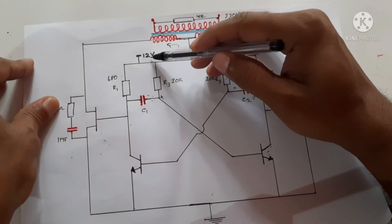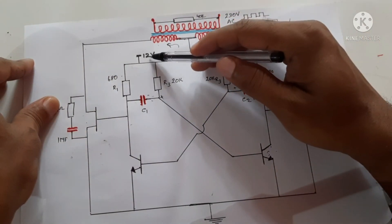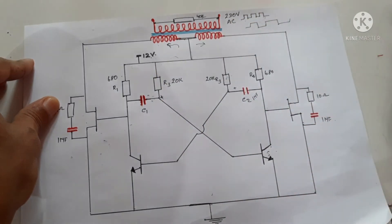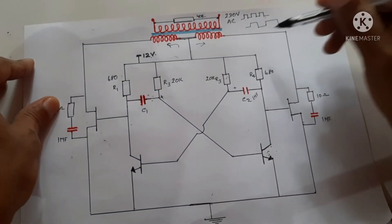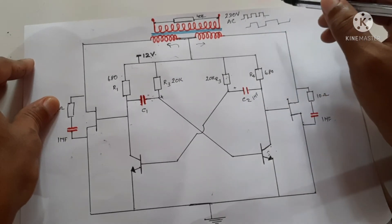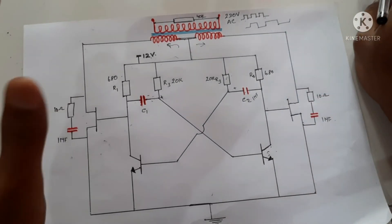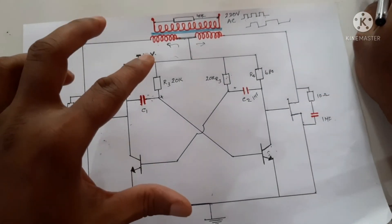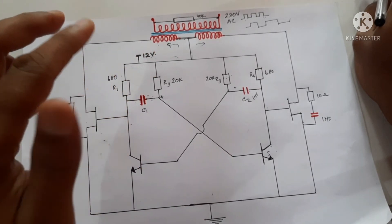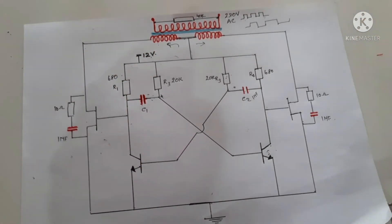We must ensure the battery voltage is constant whenever using this circuit. Since the output is a square wave, it cannot be used for every application, which is a limitation. However, it is a simple circuit using the astable multivibrator mode.